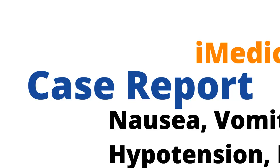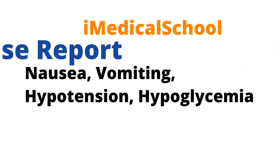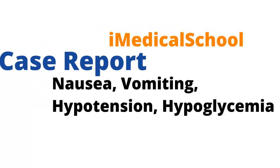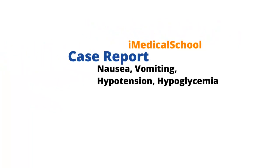These case report videos will focus on how to approach patients who come in with complicated histories and create a broad but relevant differential diagnosis, as well as come up with an appropriate workup and management of the patient. In today's case, we will see a patient who comes in with nausea, vomiting, hypotension, and hypoglycemia or low blood sugar. So let's get on with the case.